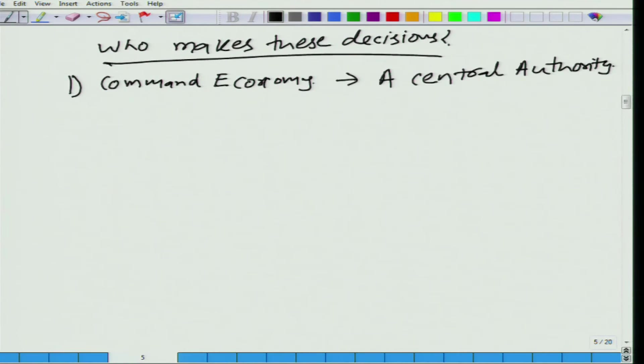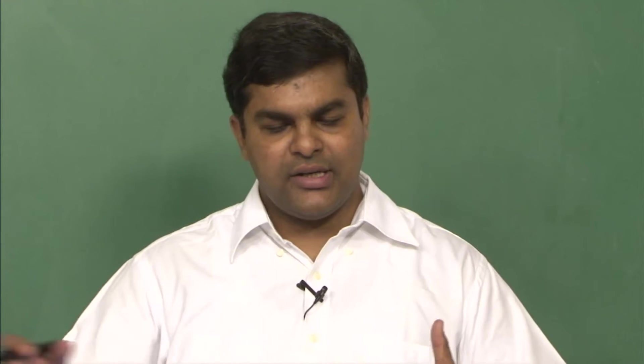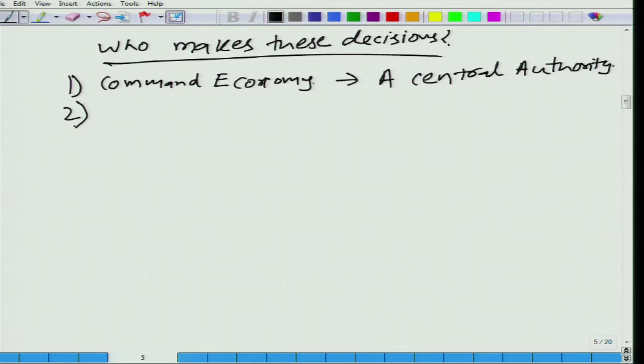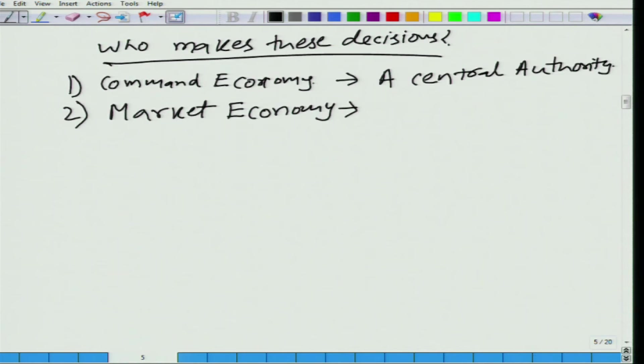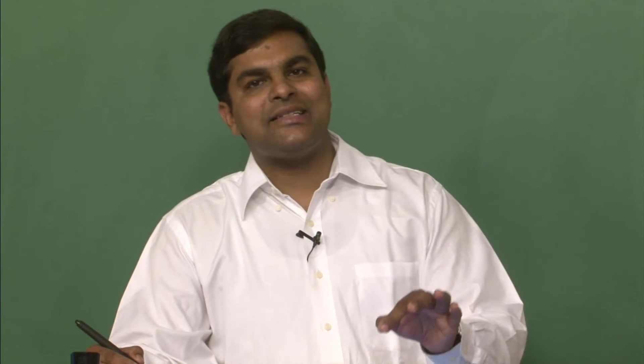In a command economy, individuals do not have to make many choices — the government decides for the individual. The second type is market economy. Here, as opposed to command economy, the decisions are made by individuals. For example, a farmer in West Bengal who produces some rice — nobody tells him how he should produce or where he should send his produce. The individual is deciding on his own about these allocation questions.